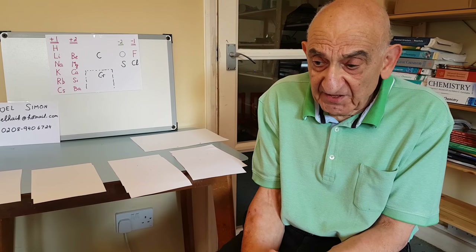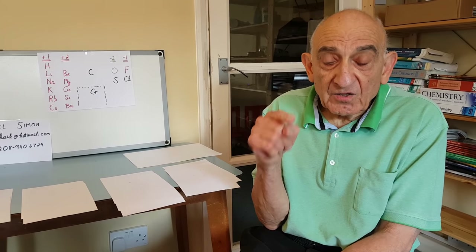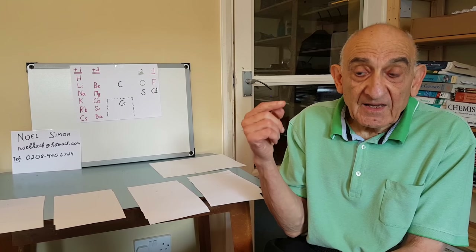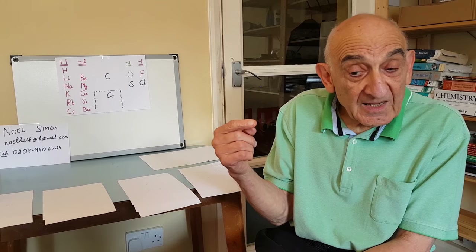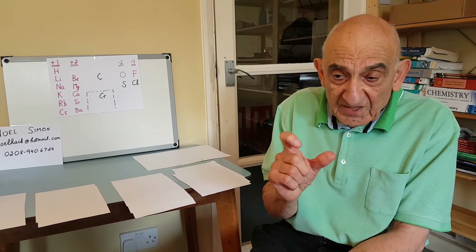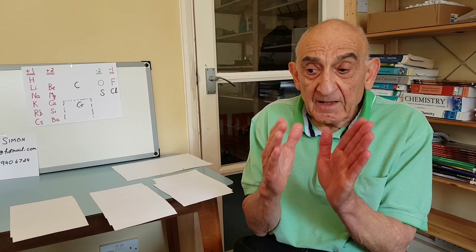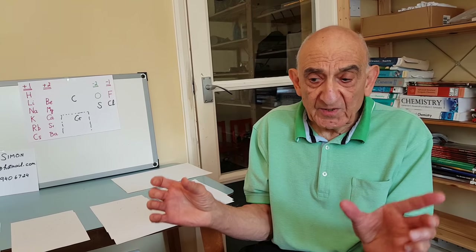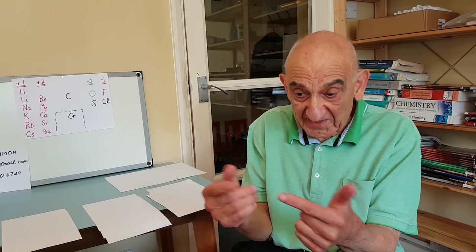At GCSE you'll learn about oxidation and reduction using the word OIL RIG, where oxidation is loss of electrons, so atoms or ions become more positive. Reduction is gain of electrons, so atoms or ions become less positive or more negative — it's really the direction you're moving in. You also have to learn how to balance equations, and at GCSE you do this by making sure you have the same number of atoms of each element on either side of an equation.